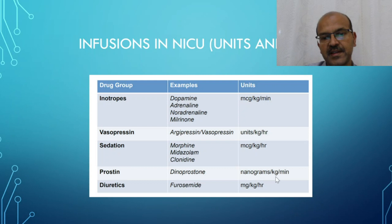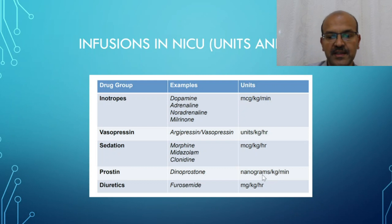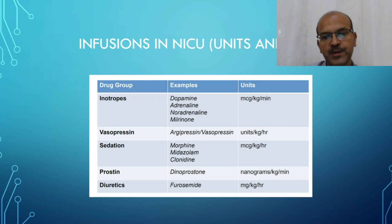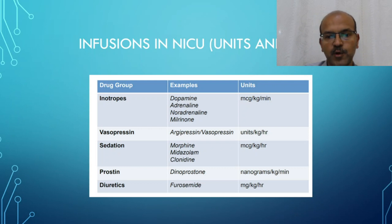Prostaglandin — it can be either nanogram or microgram. It's better that your unit, the cardiologist, and your team discuss in the same terms: either use microgram or nanogram, but stick to the same one. Don't go back and forth.